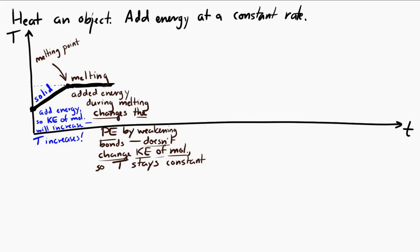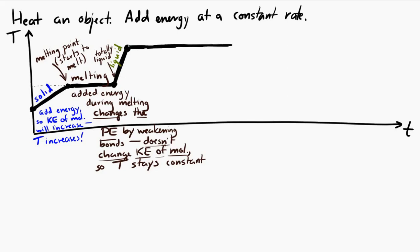That phase change takes some time. Once everything has become liquid, there's no more potential energy change to be had, and the temperature will increase again — increasing and increasing until it reaches the boiling point. Then it transitions from liquid to gas. During that phase change, again, you're not changing the average kinetic energy of the molecules, so you're not changing the temperature. Instead, you're changing the potential energy of the substance and the bonds. So during boiling, the temperature doesn't change. Once it's completely gas, the temperature will rise again.